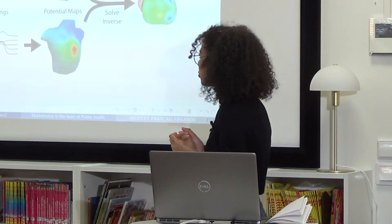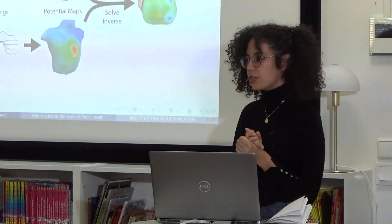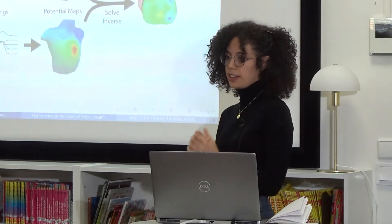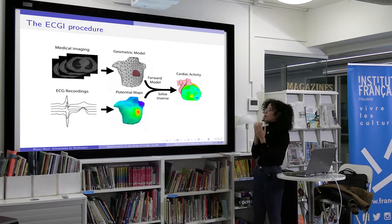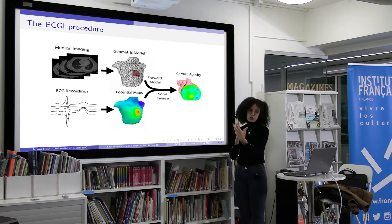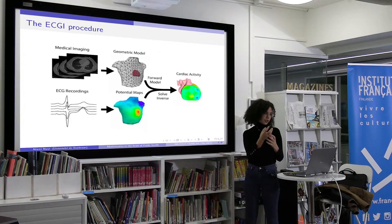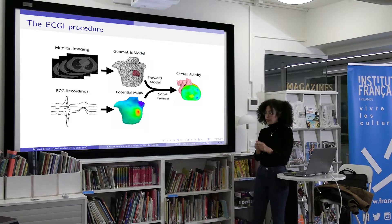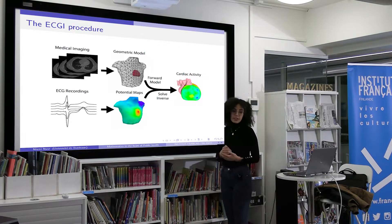One of the problems I would like to talk about is the ECGI problem. ECGI is a fairly new, non-invasive imaging technique. You come to the doctor, they take measurements from you, and you don't need to do anything invasive. As mathematicians, for the ECGI problem we need a medical imaging picture just to see the geometry of the torso, the geometry we work with.